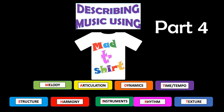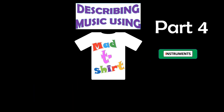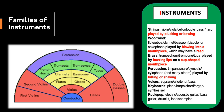In part four of our mad t-shirt series we're going to be focusing on instruments of all kinds. We're going to be thinking about the way that instruments are divided up into families: strings, woodwind, brass, and percussion, depending on how the sound is produced on each instrument. This diagram shows how an orchestra is laid out, with the strings at the front shown in red, the woodwind behind in yellow, the brass behind them in green, and the percussion at the back in purple.